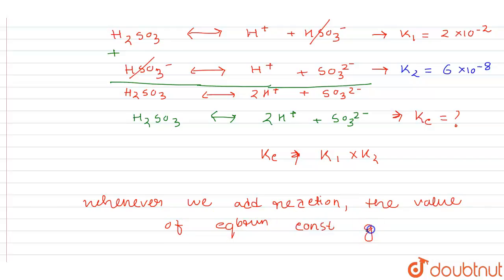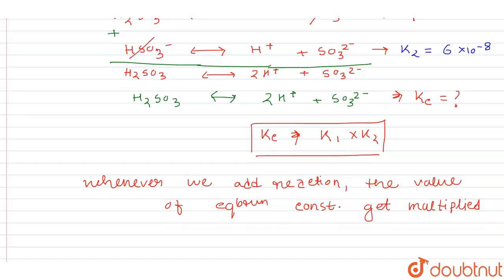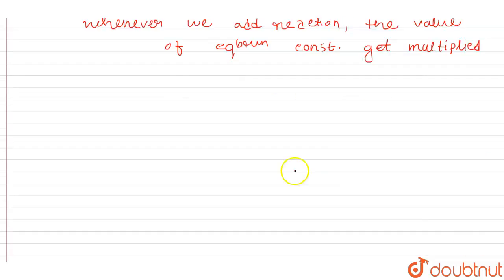The reverse is also true: whenever we subtract a reaction, the equilibrium constant gets divided. So for our problem, the value of Kc will be K1 multiplied by K2.